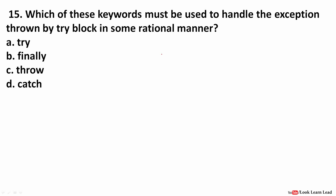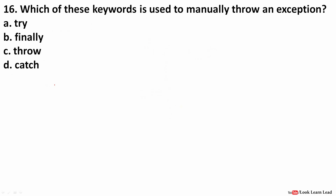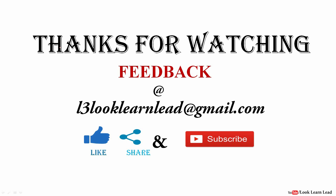Which keyword handles exceptions thrown by a try block? If lines 1 to 10 are placed in a try block and an exception arises, it is handled by the catch block — this is done automatically by the compiler. Which keyword is used to manually throw an exception? The throw keyword is used to handle exceptions manually. This covers all the MCQs on Java.